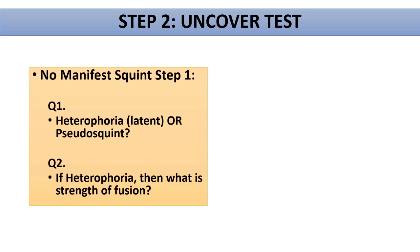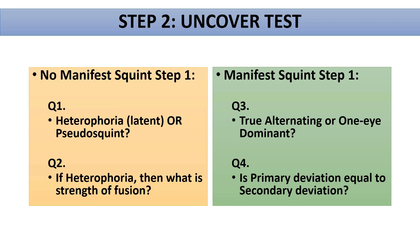Now to get more information, we do the uncover test. There are two situations from the cover test: no manifest squint or manifest squint was present. If there was no manifest squint, the uncover test answers: is it a heterophoria or a pseudo squint, and if heterophoria is present, what is its strength of fusion? If manifest squint was present, the uncover test tells us whether it is an alternating squint or a unilateral dominant squint, and gives information about primary versus secondary deviation.